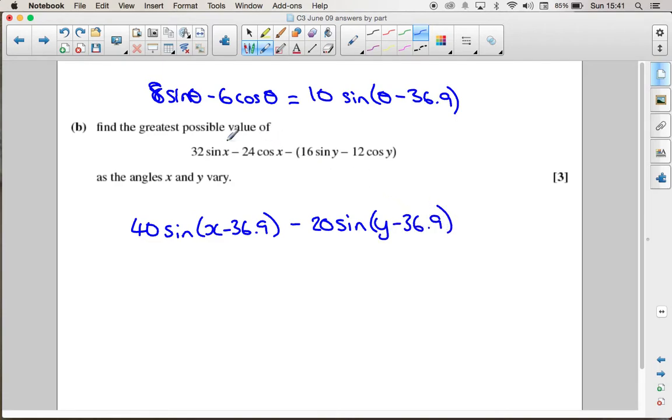So to find the biggest value of this, we can find the biggest value of this. Now you can see that we're doing a subtraction here. If I want to make this sum have the biggest answer I can get, I obviously want to start off with something really big, so I want the maximum for this.